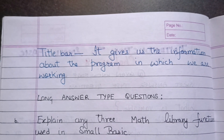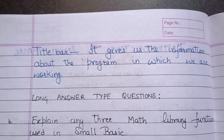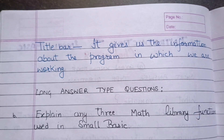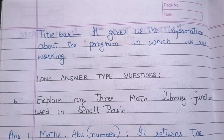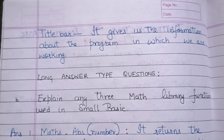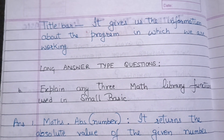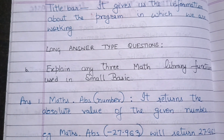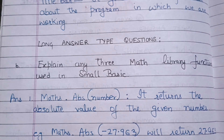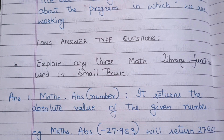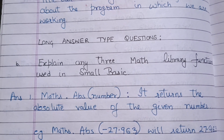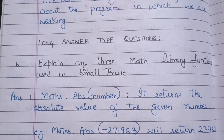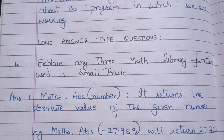Long answer type questions: Explain any three Math library functions used in Small Basic. First one is Math.Abs(number) — it returns the absolute value of the given number. For example, Math.Abs(-27.963) will return 27.963, as the negative sign is removed.